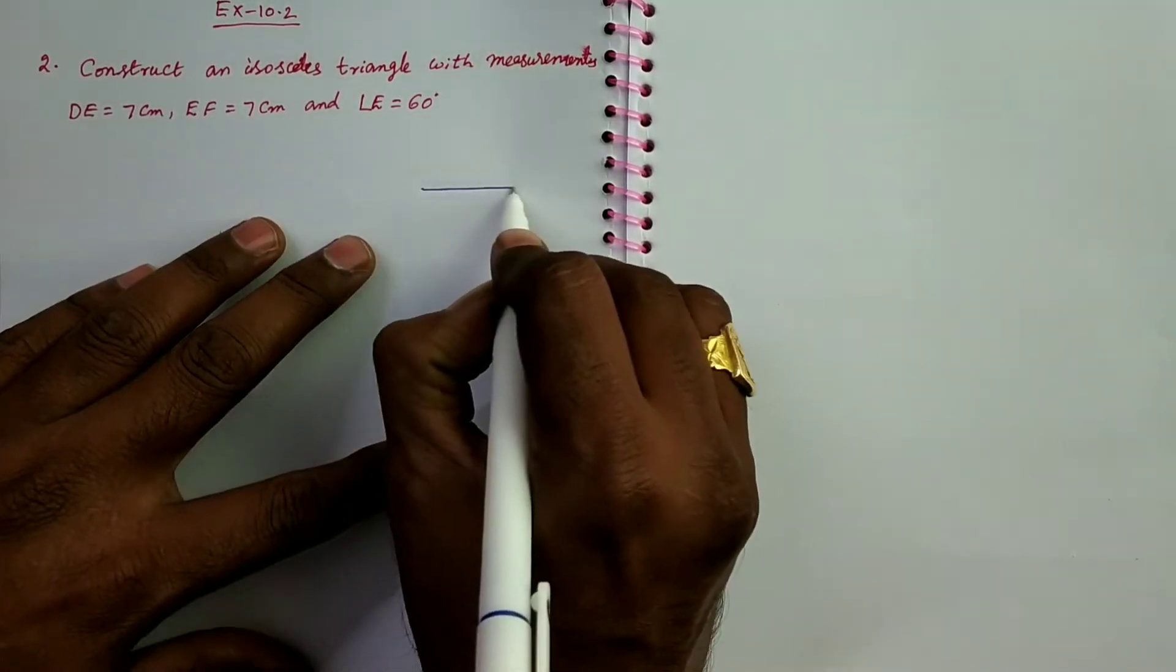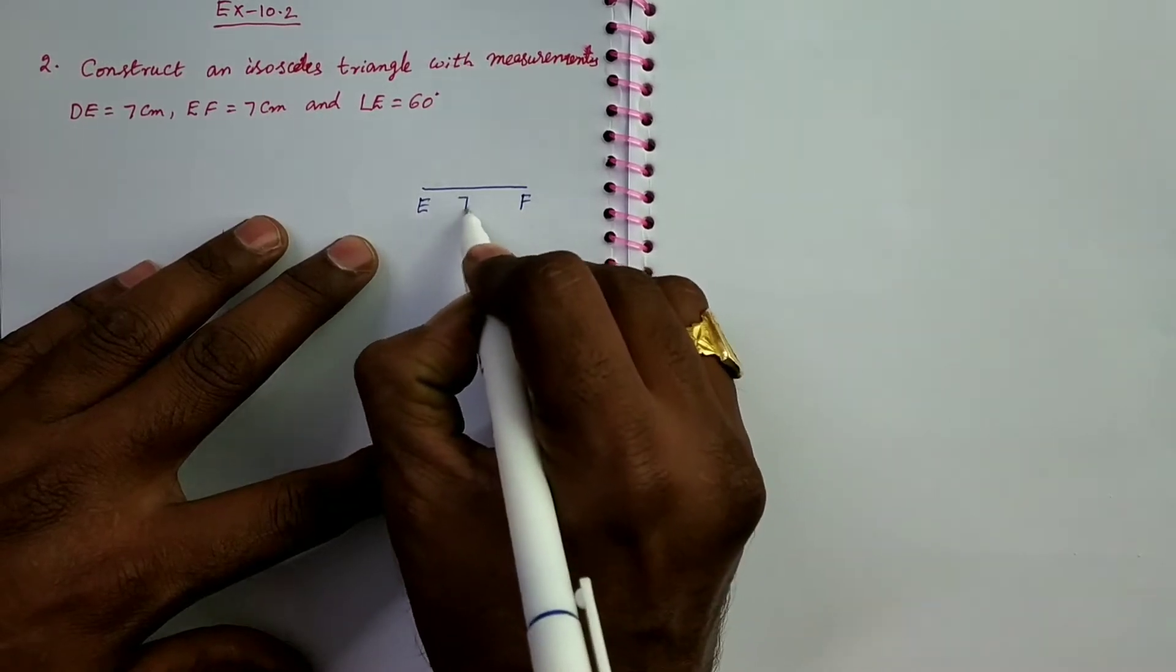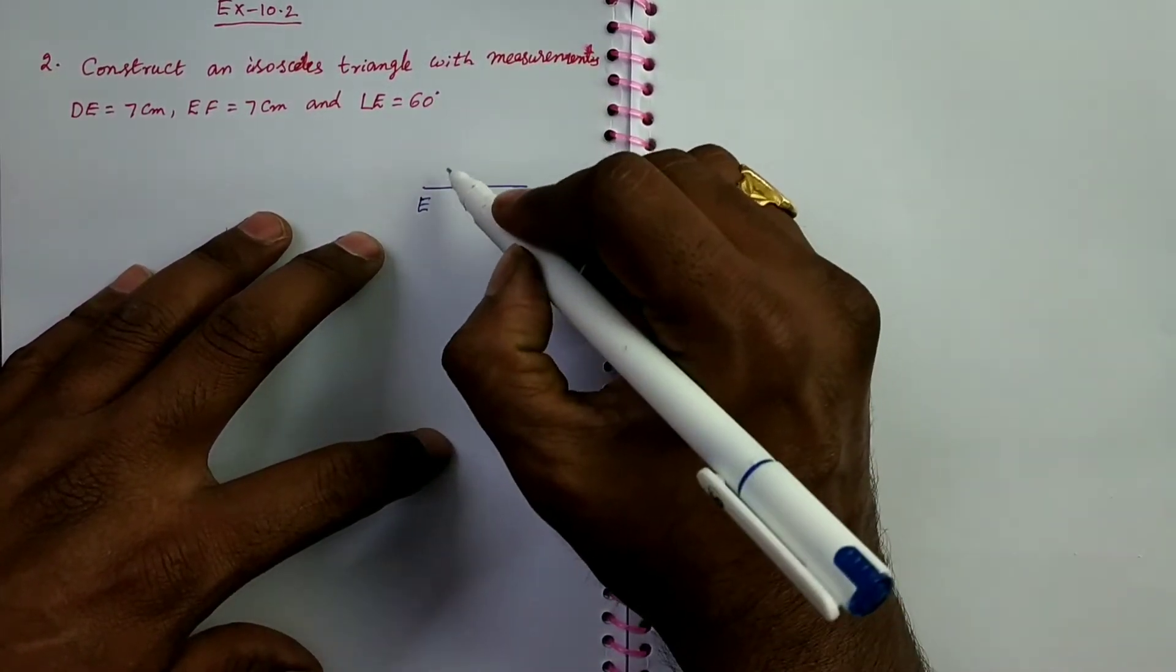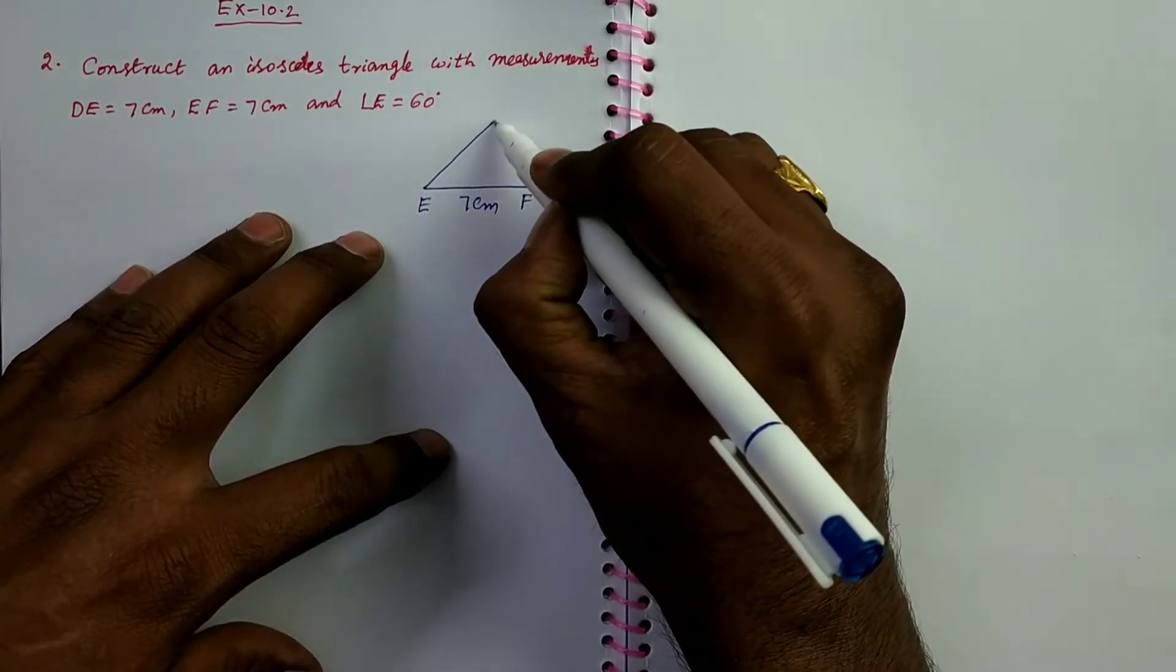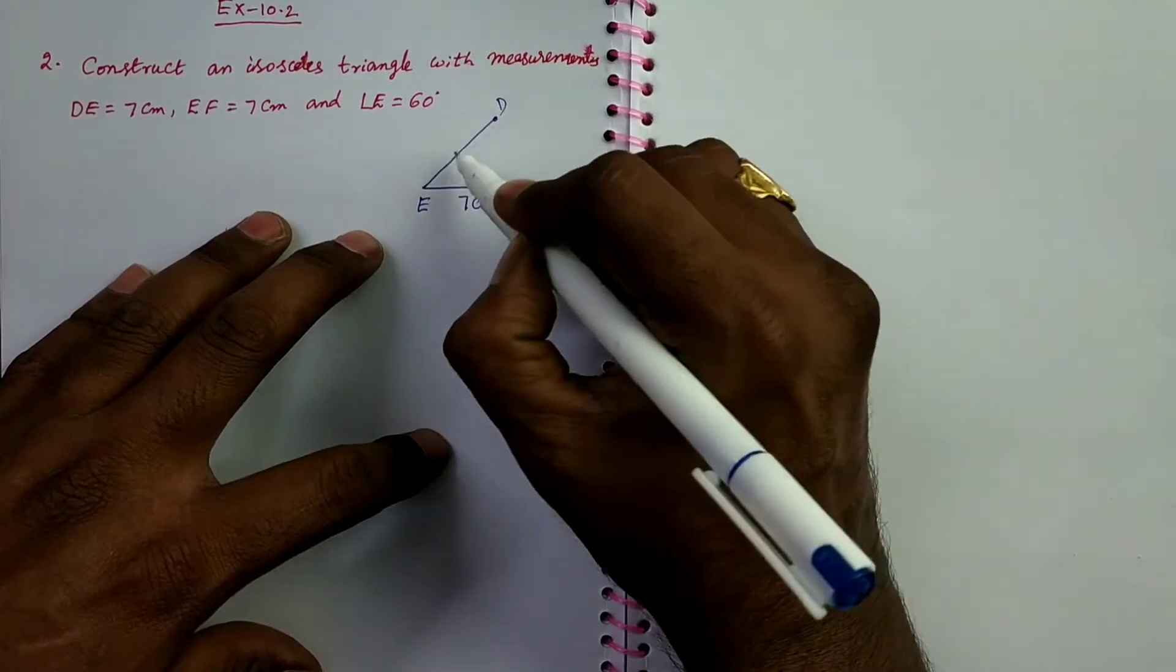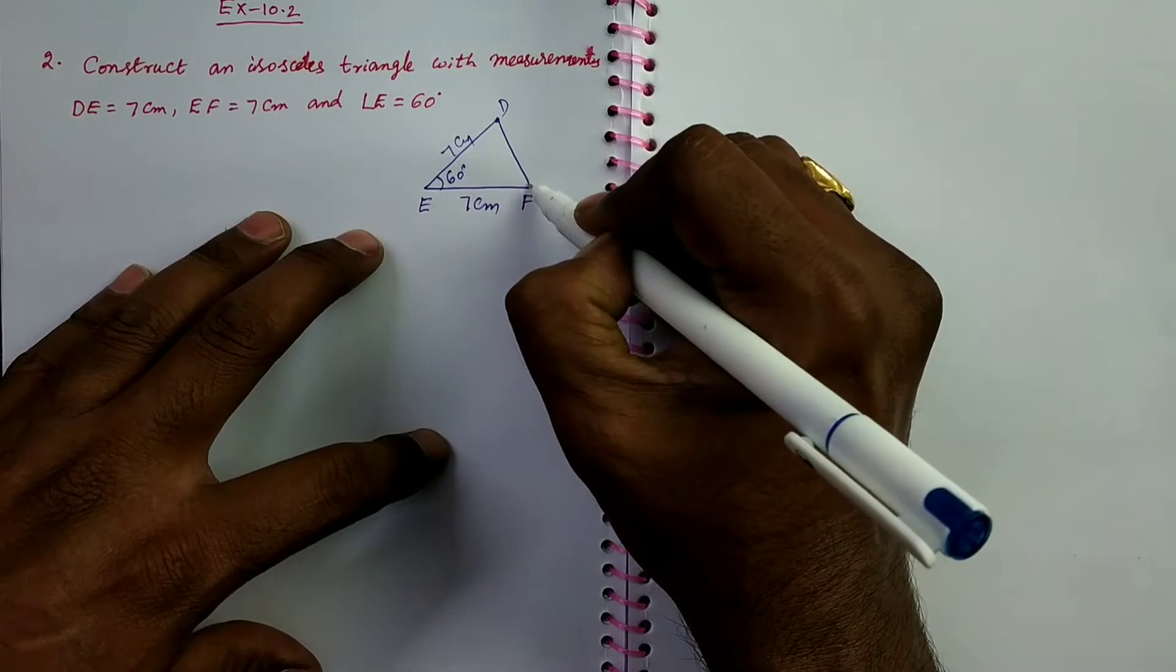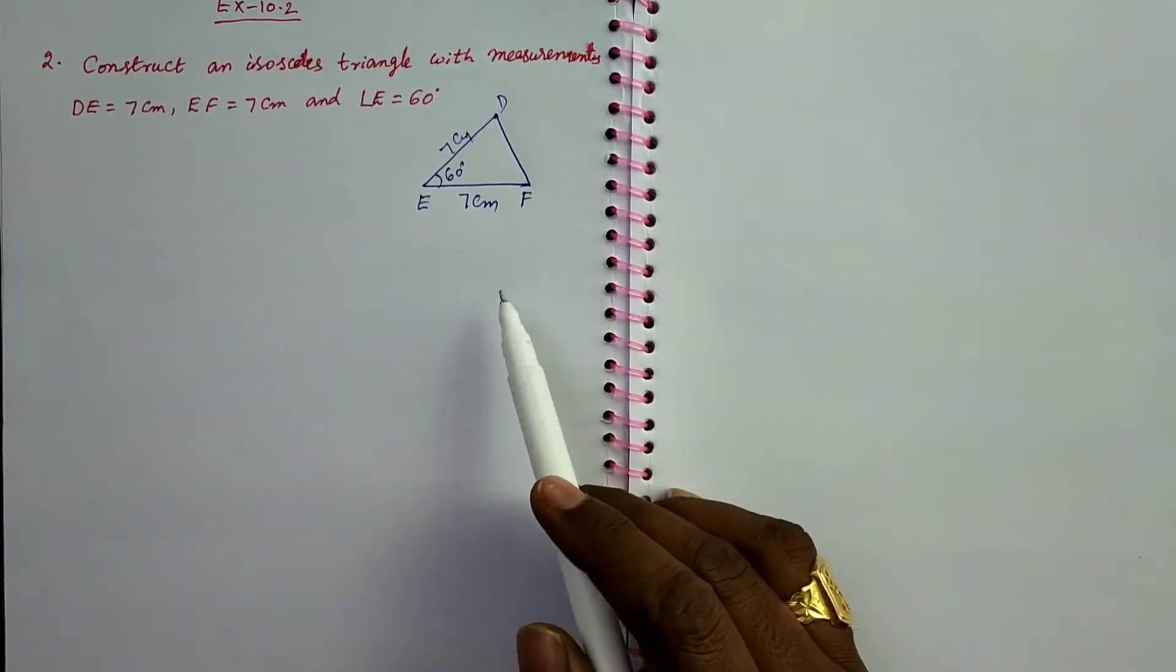So take EF as, draw rough diagram first. EF is 7 cm. Next angle E is 60 degrees, so DE is 7 cm, and the angle E is 60 degrees. So this is the rough diagram of the given triangle.